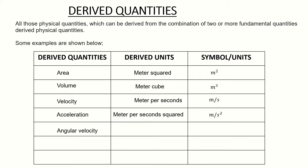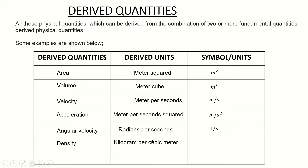Next is angular velocity, and the unit is radians per second. It is a combination of two units — radians and seconds — giving radians per second, so angular velocity is a derived quantity. Next is density: the unit is kilogram per cubic meter, a combination of the base units kilogram and meters. So density is a derived quantity with symbol kg/m³.